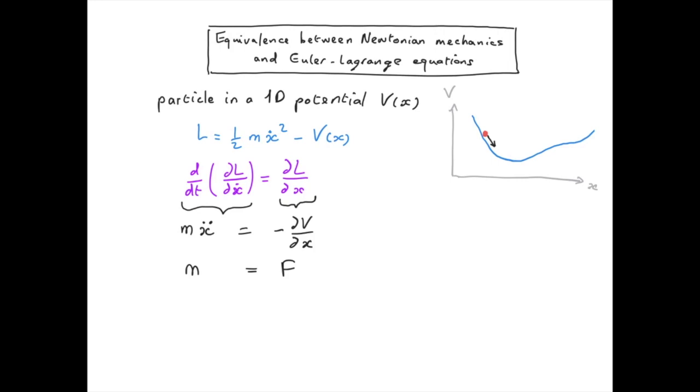So in the case of a one-dimensional potential, you see that the Euler-Lagrange equation leads to Newton's second law.